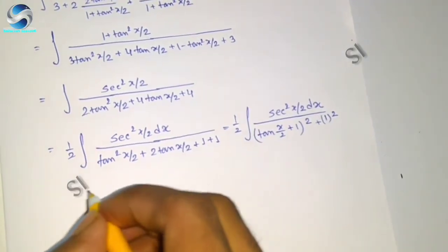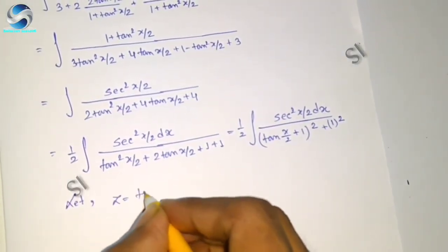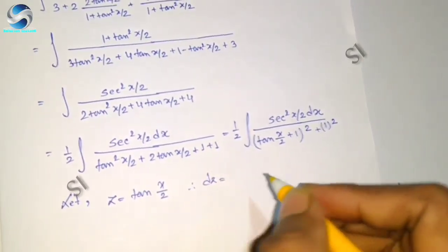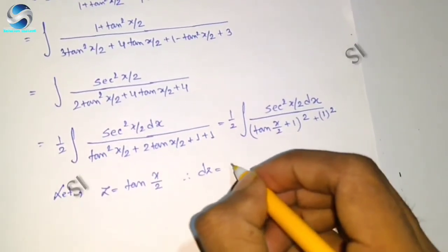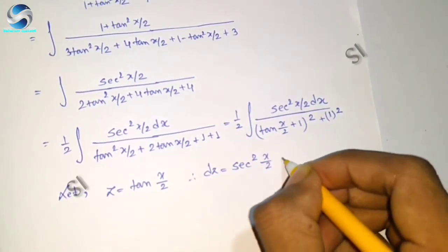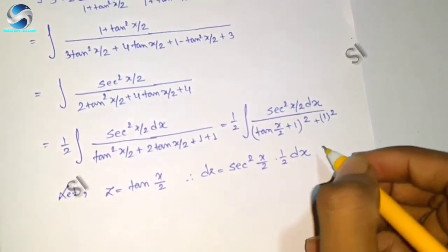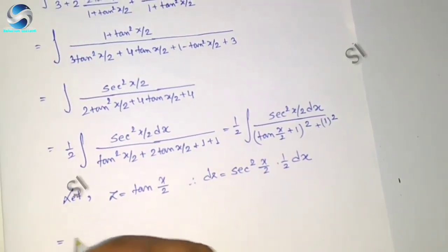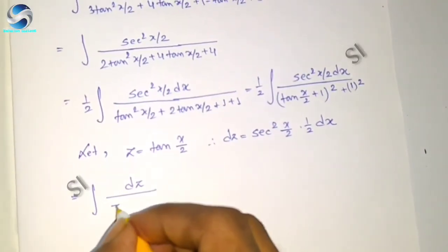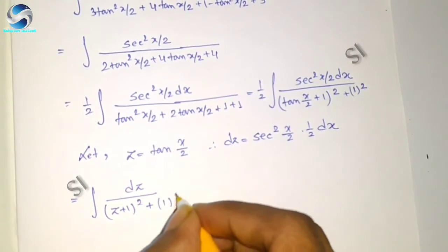Now let z equal to tan(x/2). Therefore dz equals sec²(x/2) times half dx. Substituting, the integral becomes half integration of dz divided by (z + 1)² + 1².